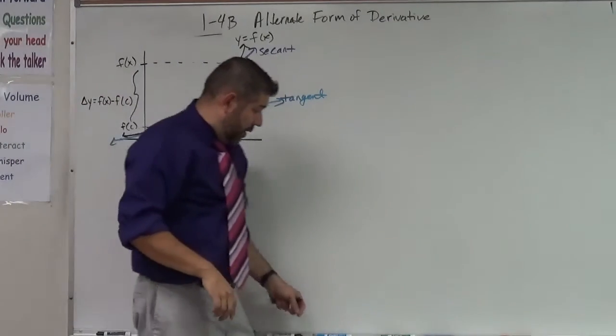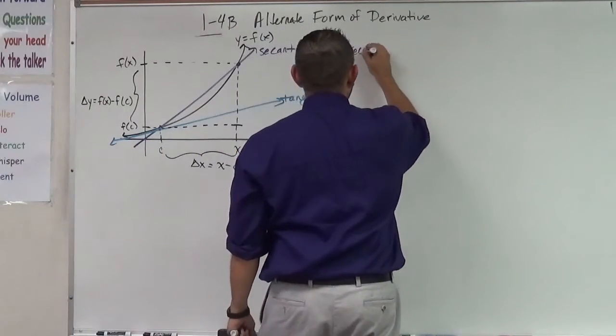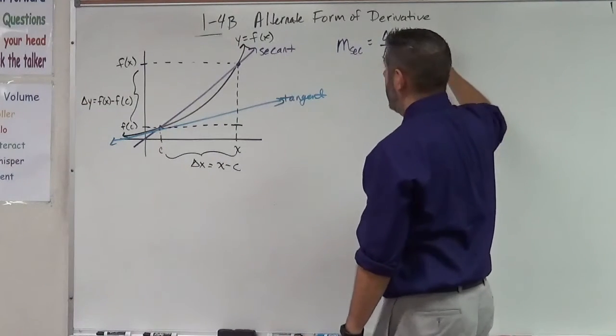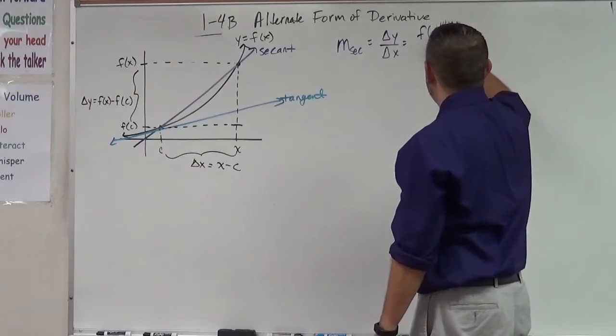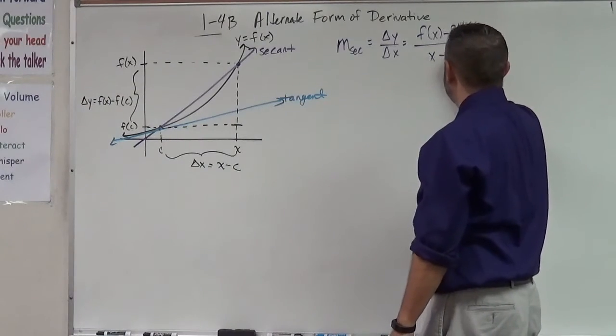So what's going to happen here is that my slope of my secant line now is now going to be like always delta y over delta x which is going to be f of x minus f of c all over x minus c.